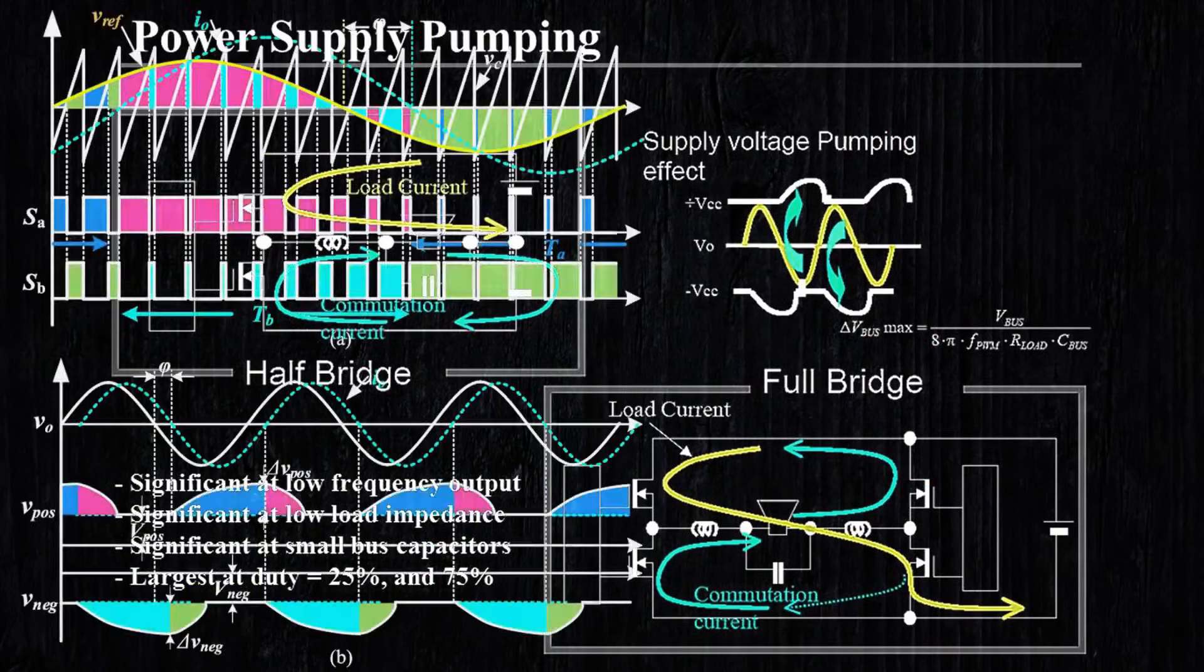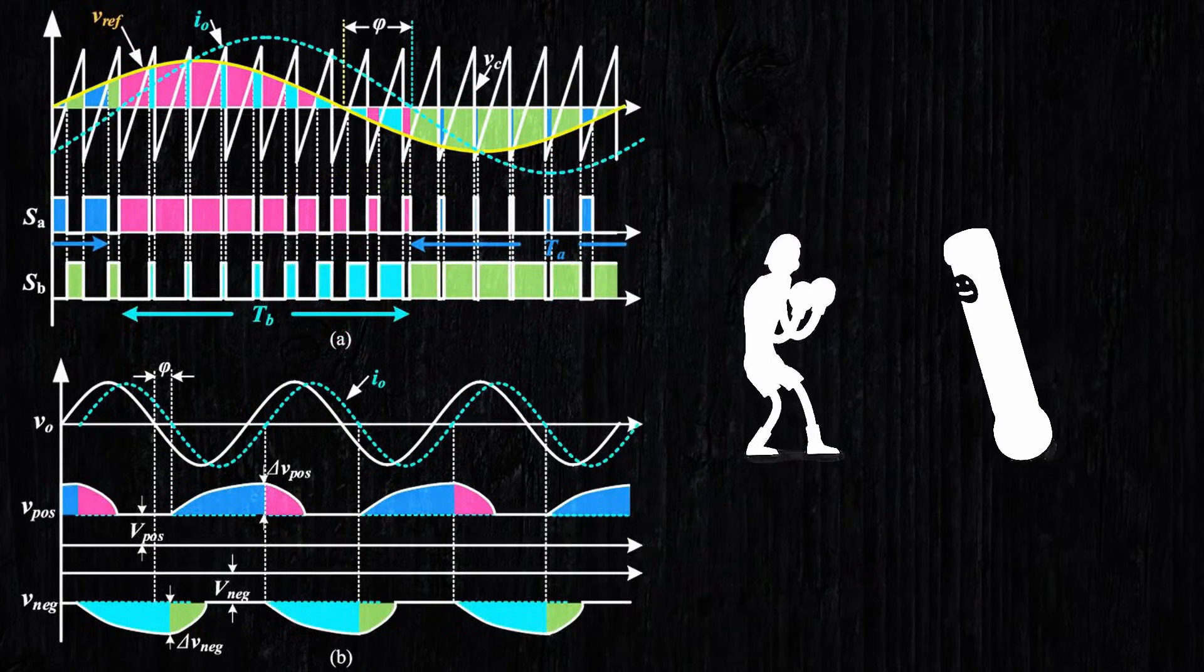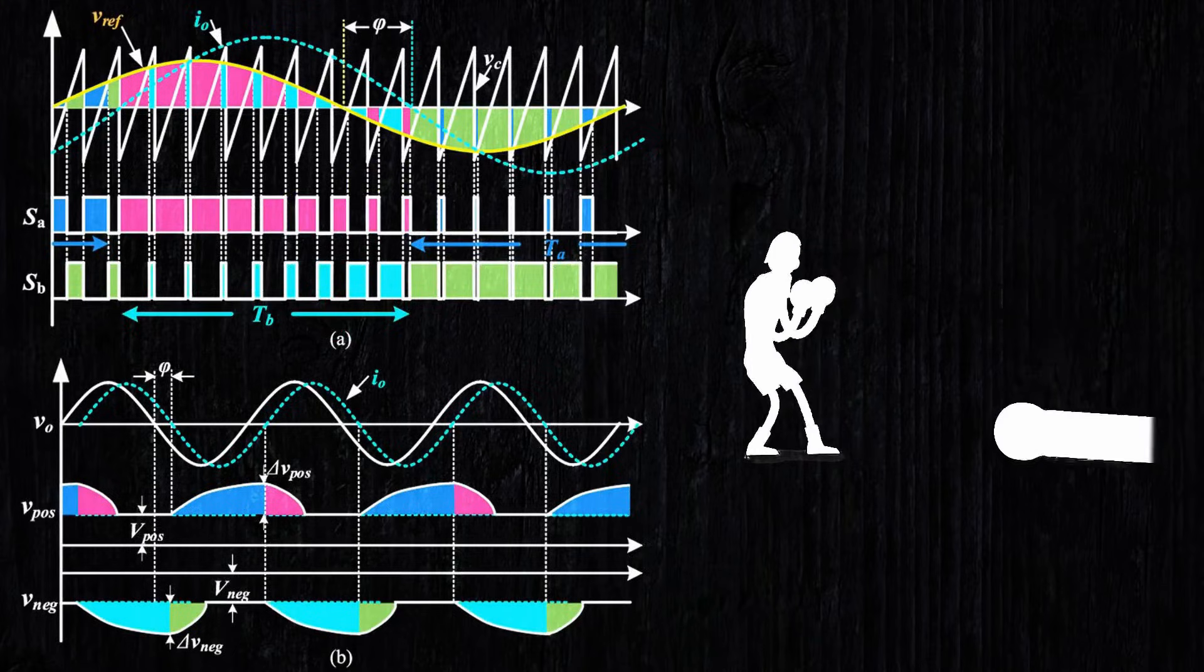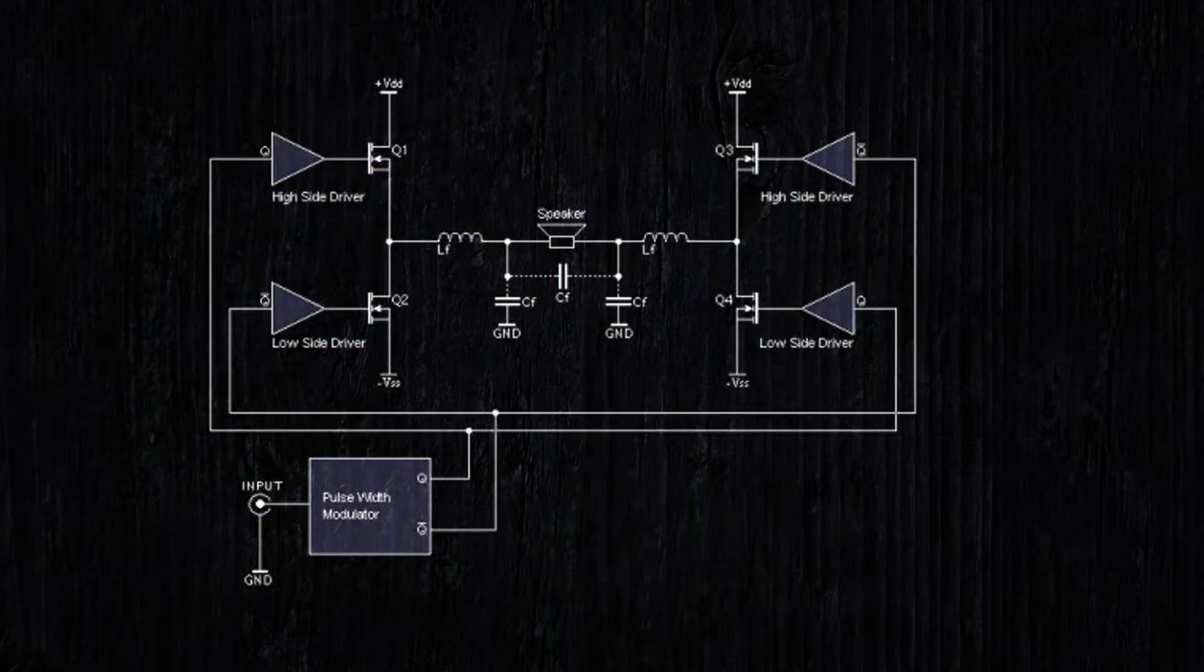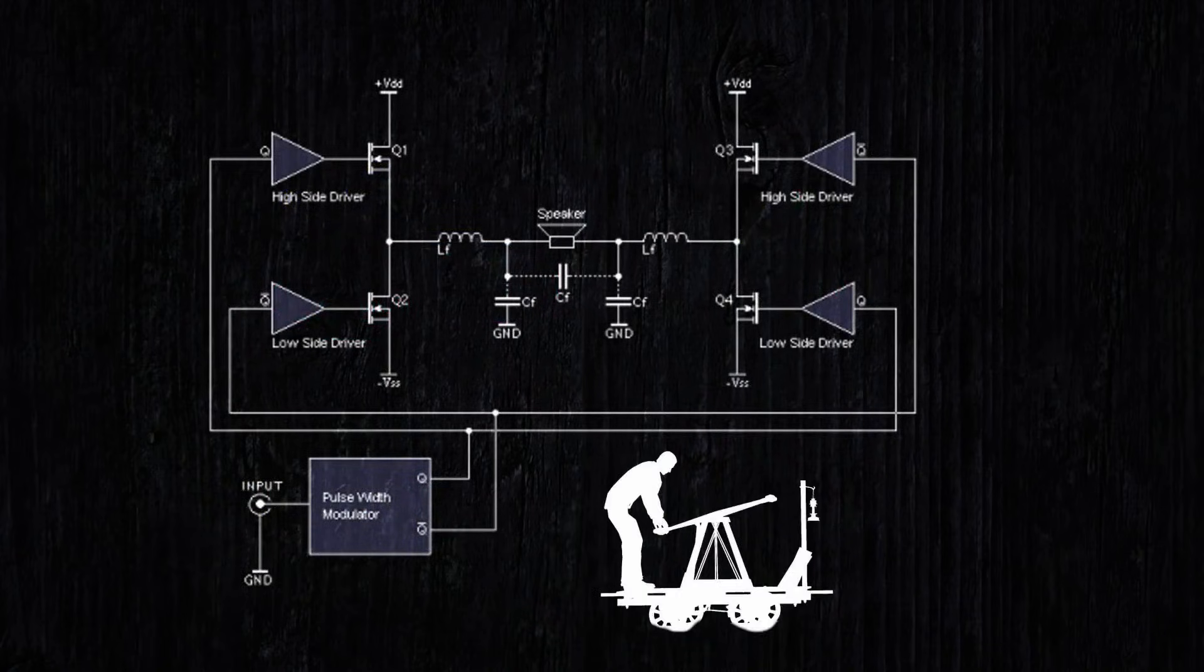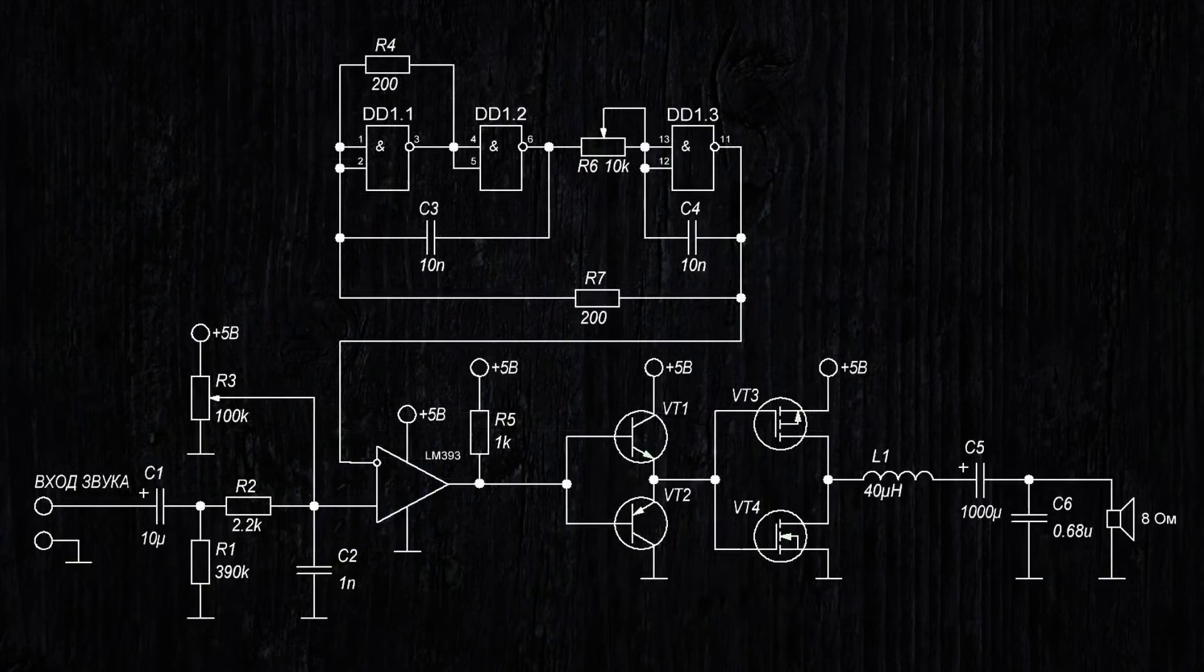This happens because the load is sharply reactive. It's like hitting a punching bag that swings back at you and you have to dodge. You can mitigate this effect and increase power by using a bridge connection scheme where the arms work alternately, like travelers on a hand car. This was the classic class D amplifier circuit.